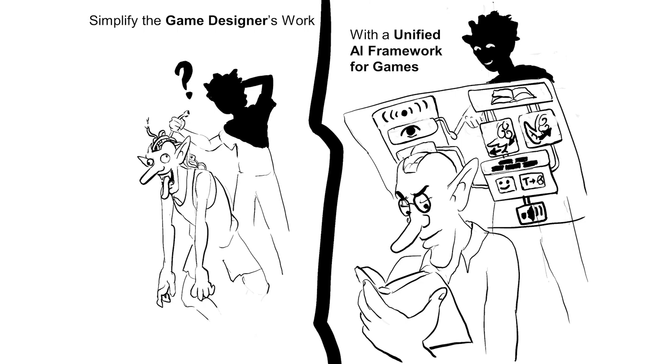My thesis explores design affordances of both new and old AI technologies, asking why are some popular and why are others widely overlooked. Through speculative game design ideas, I explore how they could impact the way that we are making games now and the type of games that we could be making in the future. I aim at creating a dictionary of what a good AI framework for games should include.